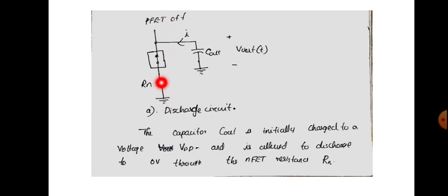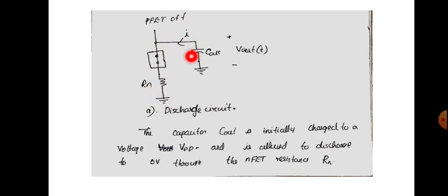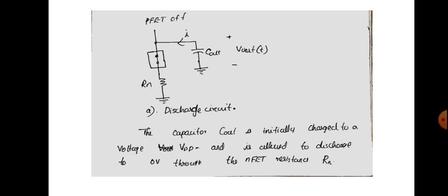The corresponding part involves the parasitic resistance field. The output capacitance Cout is the load capacitance, and this gives us the corresponding equivalent circuit for fall time analysis.